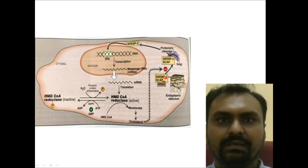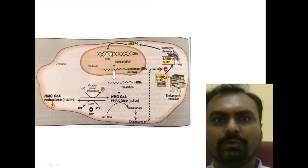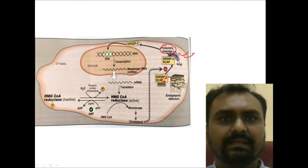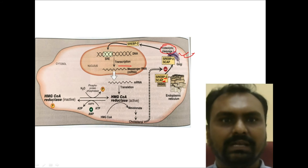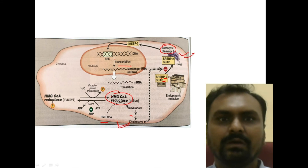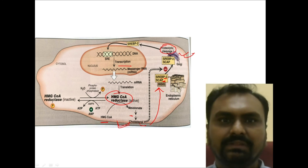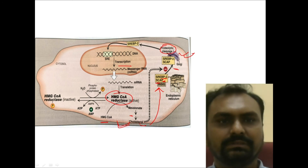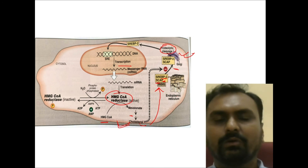To recap: SREBP is bound along with SCAP. When cholesterol level is low, SCAP exports SREBP to the Golgi apparatus where proteolytic cleavage exposes the DNA binding domain. SREBP then binds the promoter region of the HMG-CoA reductase gene, which is transcribed and translated into HMG-CoA reductase enzyme, promoting cholesterol synthesis. When cholesterol level is high, INSIG protein binds SCAP, preventing SREBP from going to the Golgi apparatus, ultimately inhibiting transcription of the gene. This is how cholesterol biosynthesis is regulated at the gene level.